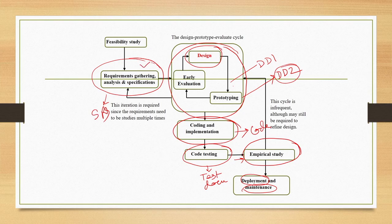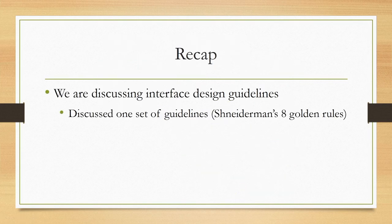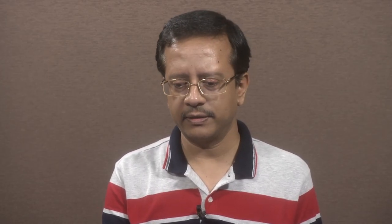We have already covered requirement gathering, and currently we are continuing with the interface design phase. In the design stage, there are two issues of concern: where to start and how to express the design. We are focusing on where to start design of an interface. The starting point can be experience and intuition, aided by design guidelines. We already discussed one set — Shneiderman's 8 Golden Rules. In this lecture we will cover another set called Norman's 7 Principles.